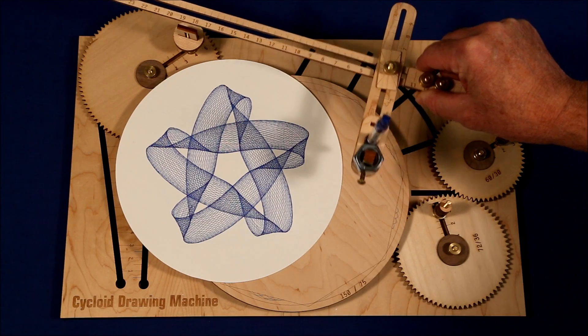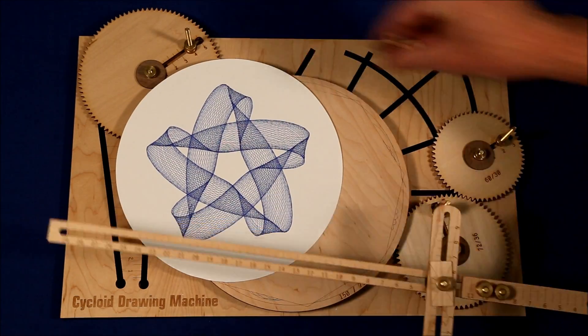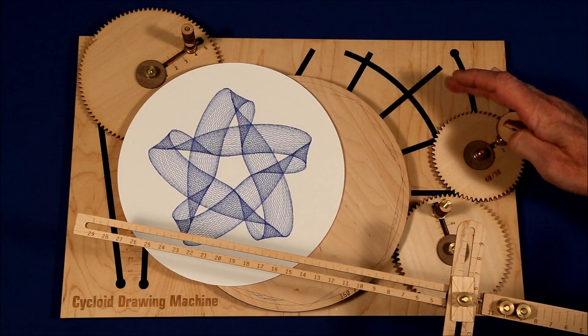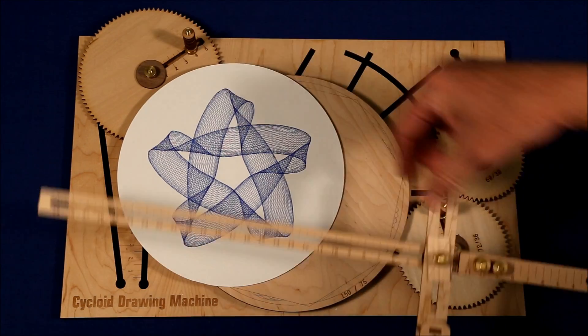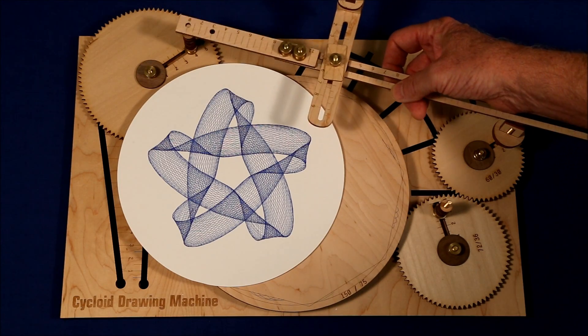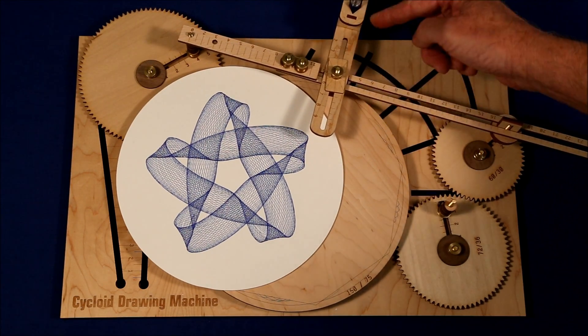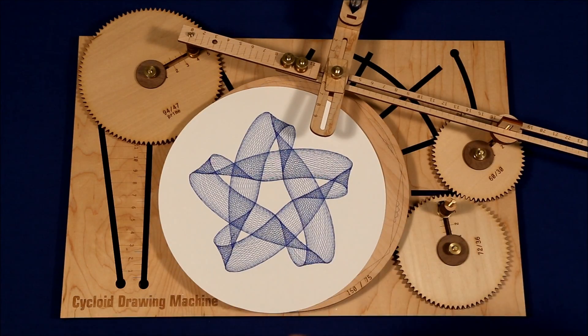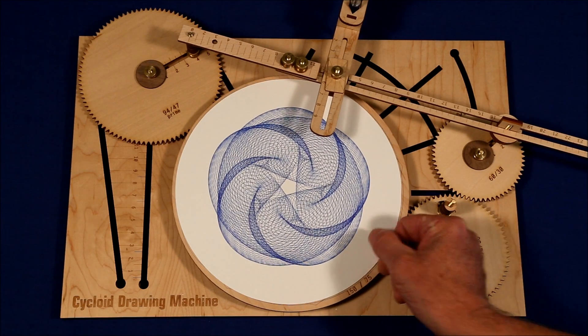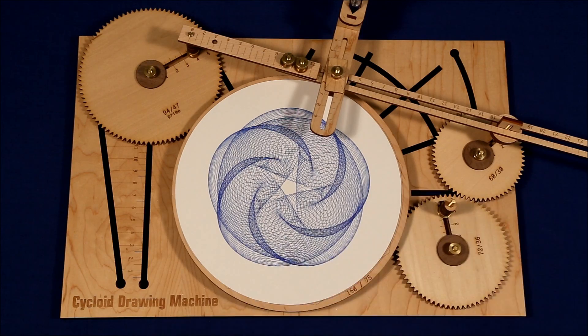You can take this off, put the fulcrum over here, switch it end for end, and of course move the pen over this way, and everything changes. Now your images are going to start looking like this. They still have five points, but the fundamental nature of them is completely changed.